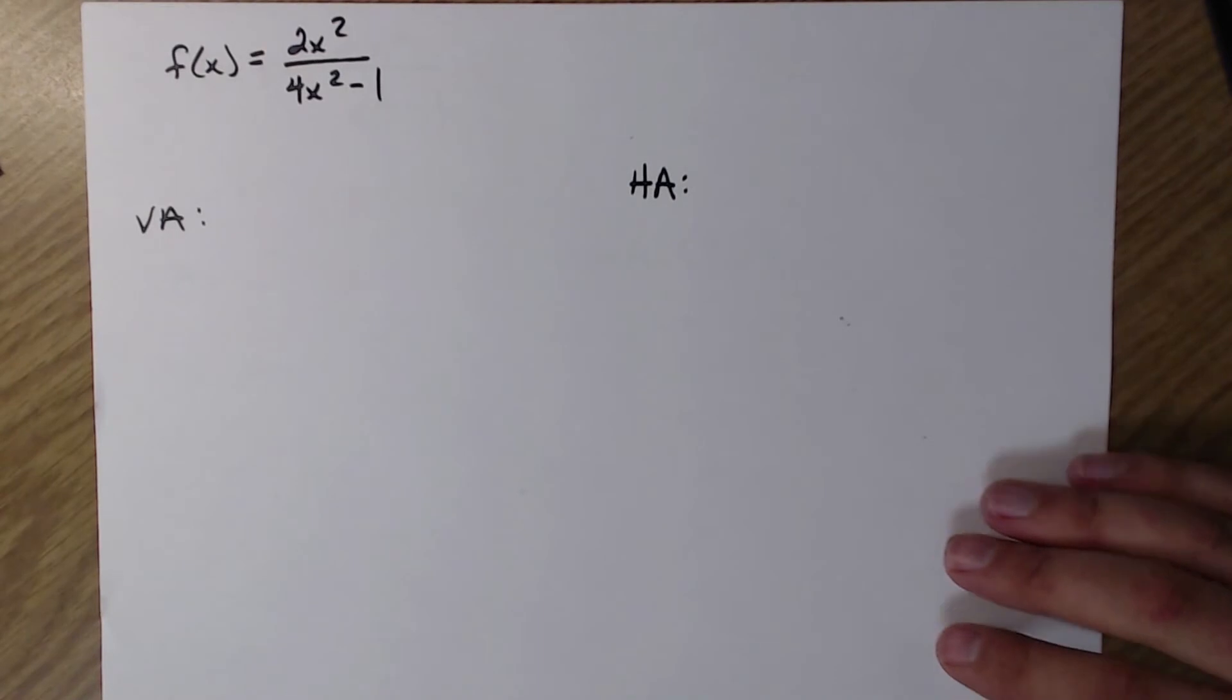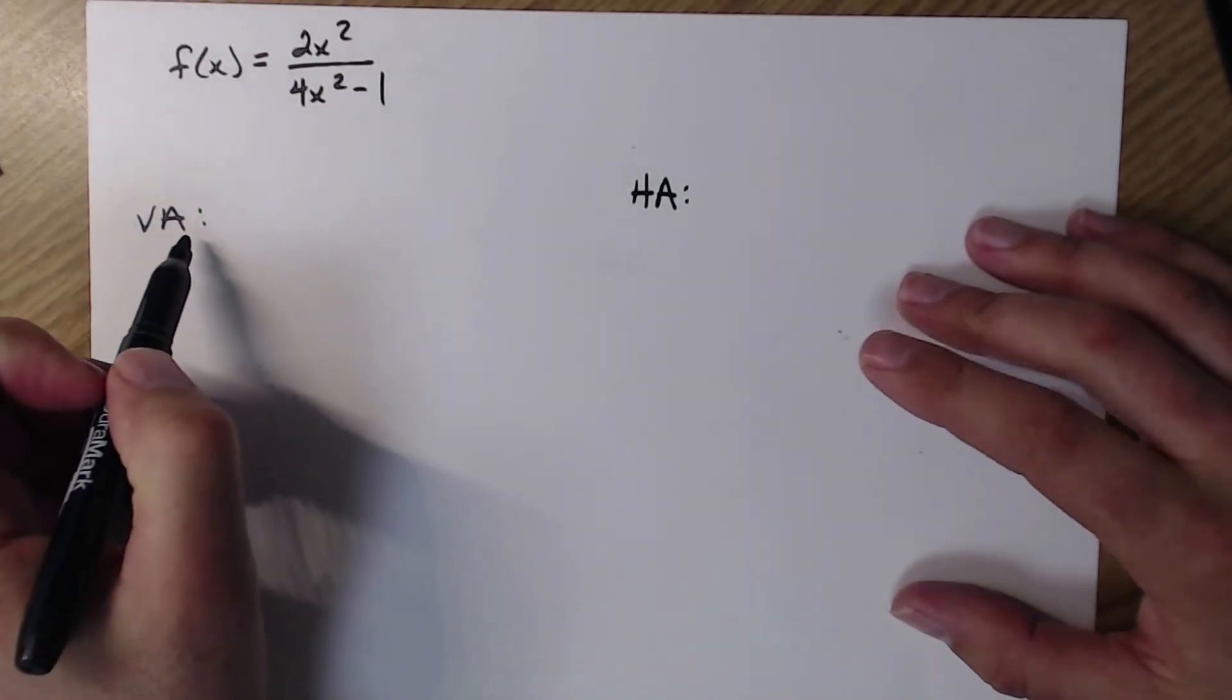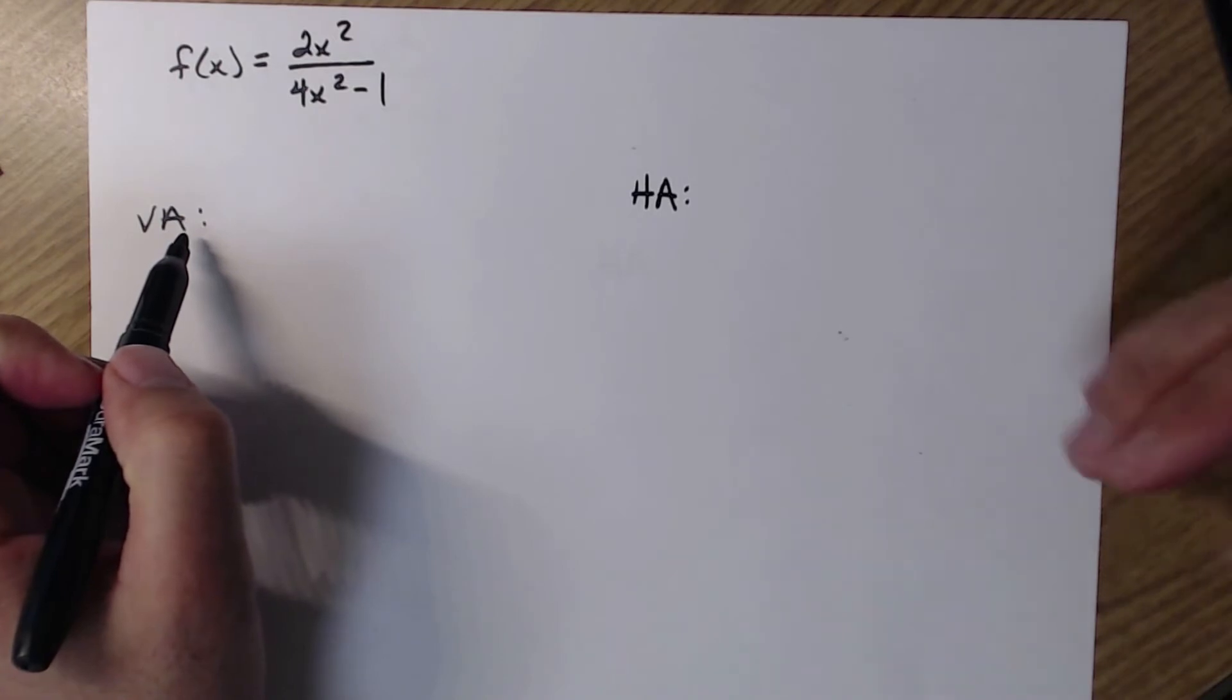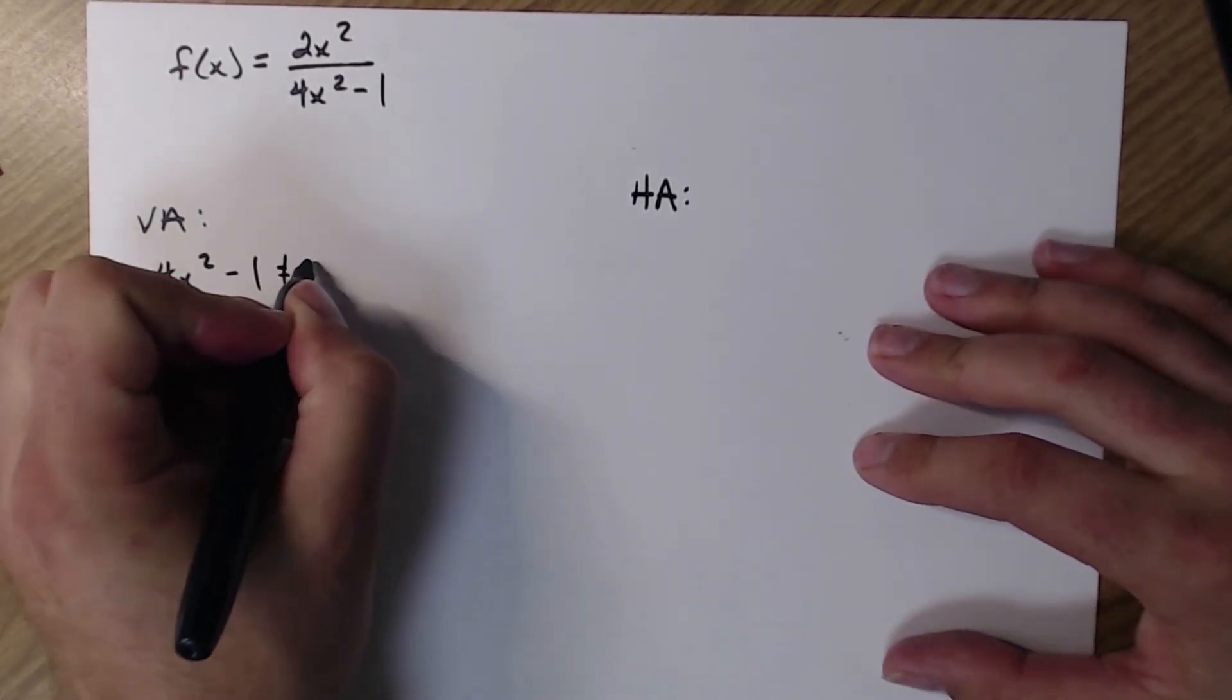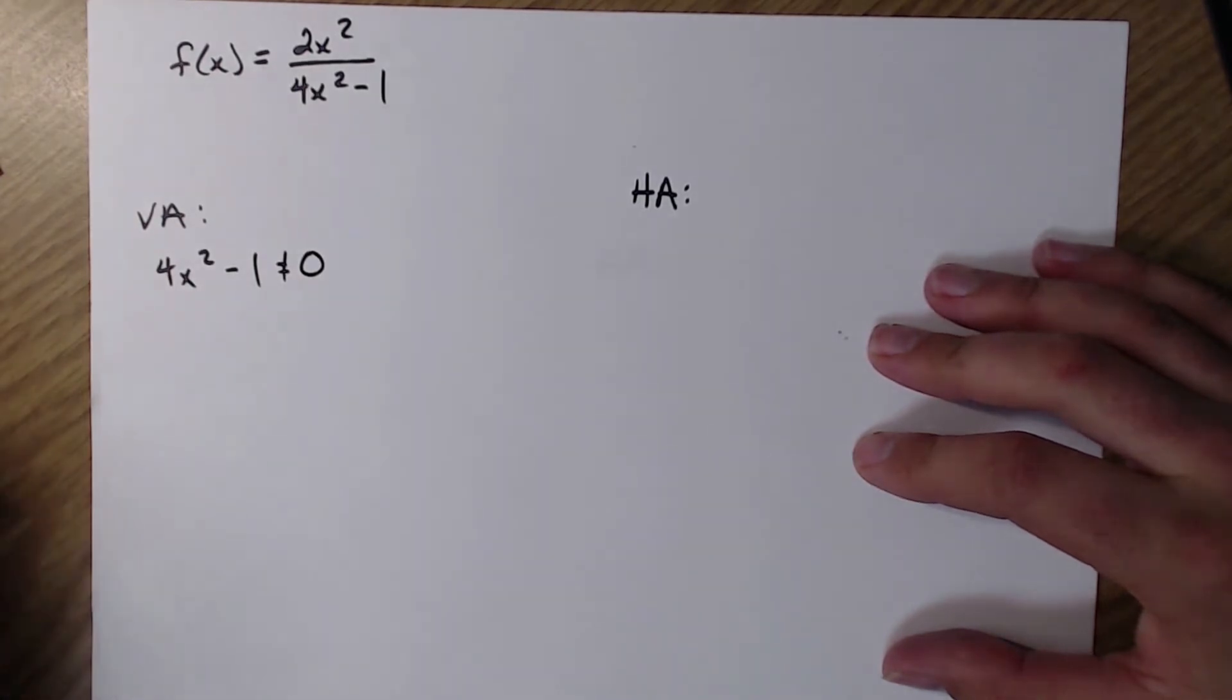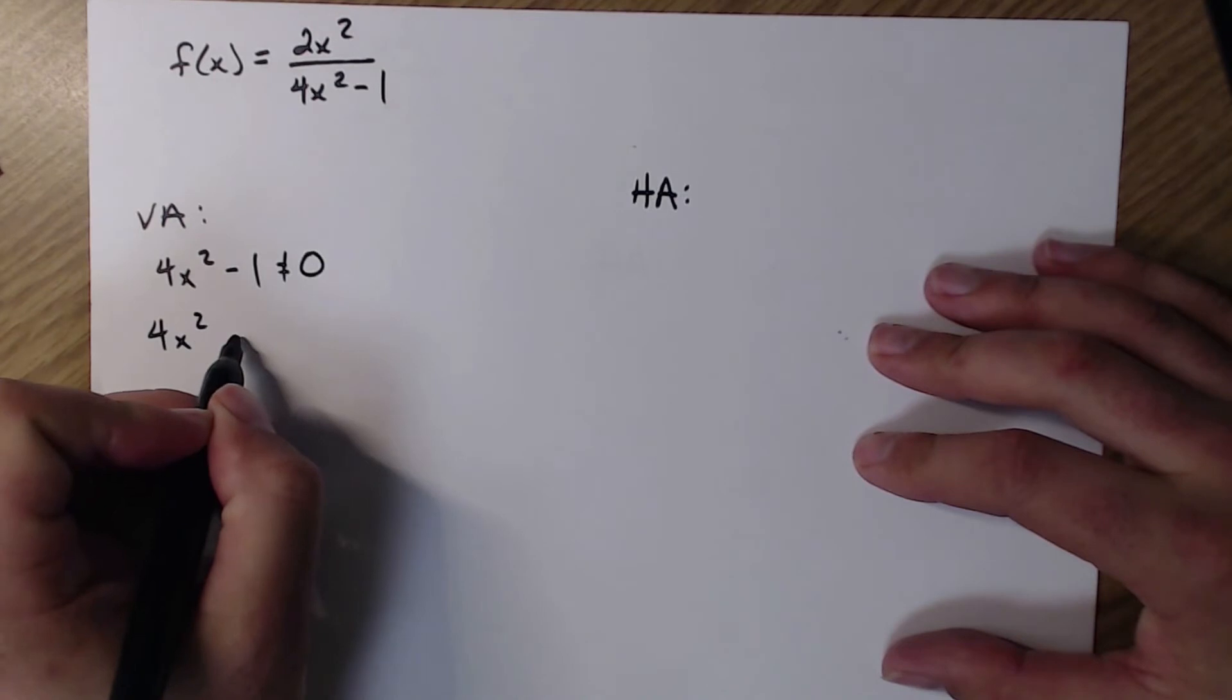Slightly more complicated. The degree is a little bit higher on top and on bottom. This time I'm going to find vertical asymptotes first because again, I think those are a little bit easier. 4x squared minus 1 is not allowed to equal 0 because I can't divide by 0 in my fraction up here.